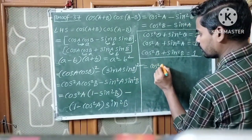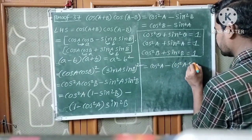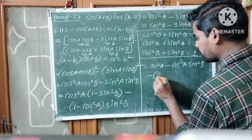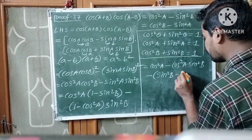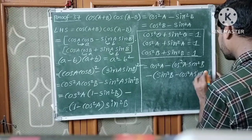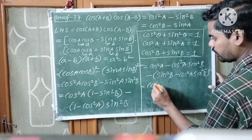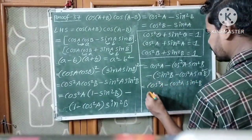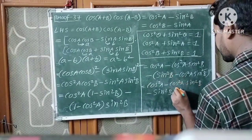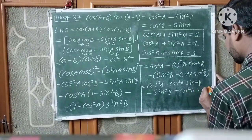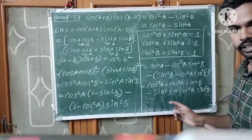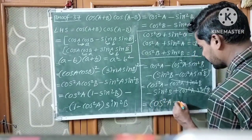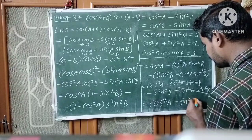Simplifying: cos²A·(1 minus sin²B) minus (1 minus cos²A)·sin²B gives cos²A minus cos²A·sin²B minus sin²B plus cos²A·sin²B. The terms minus cos²A·sin²B and plus cos²A·sin²B cancel, and at last you get cos²A minus sin²B.